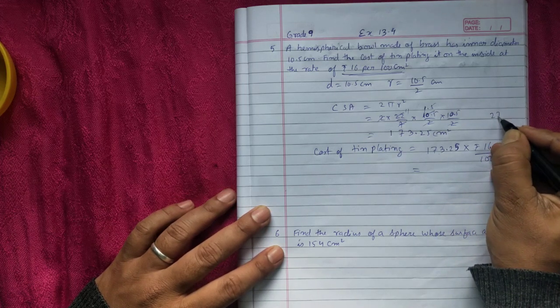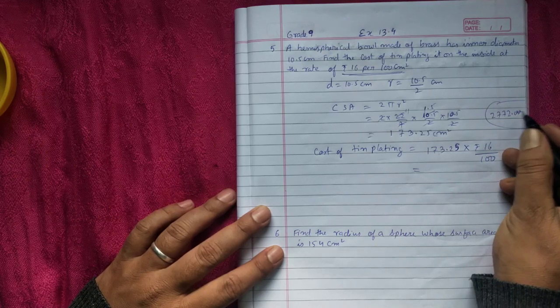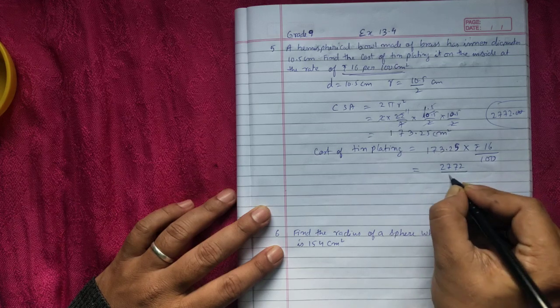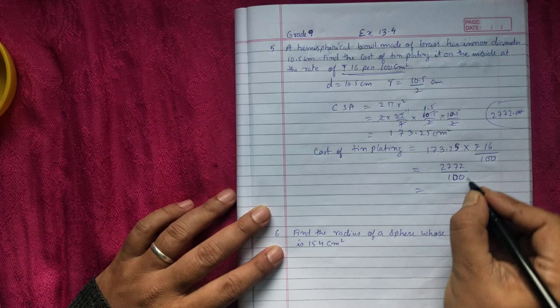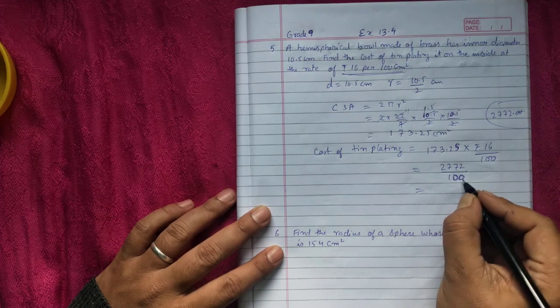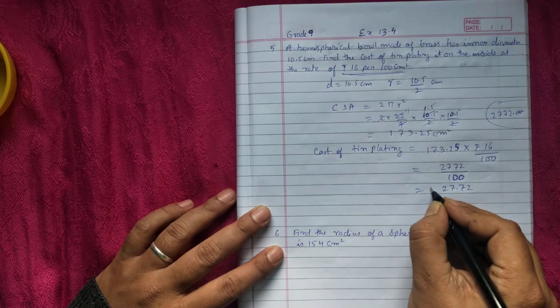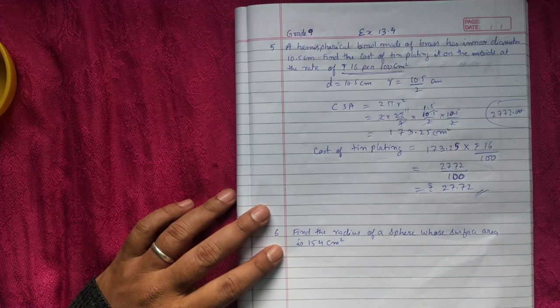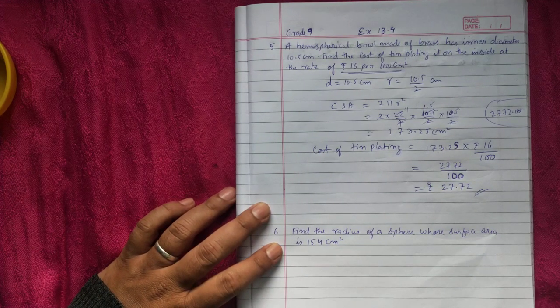We don't write the two zeros after decimal, so you're getting 2772 by hundred. When you divide by hundred two decimal places will come, 27.72. So this is the final answer, cost of thin plating. You can pause the video and write the solution of question number five.